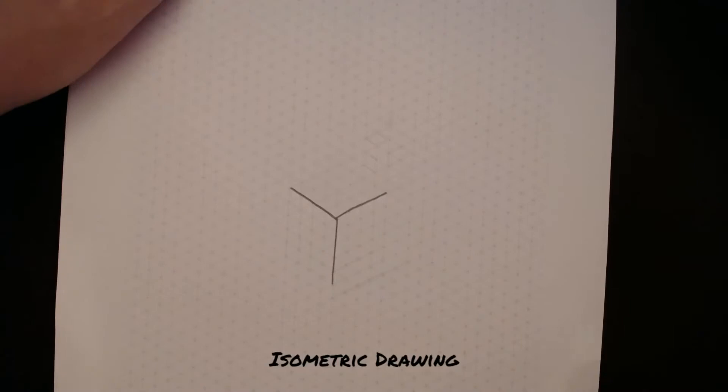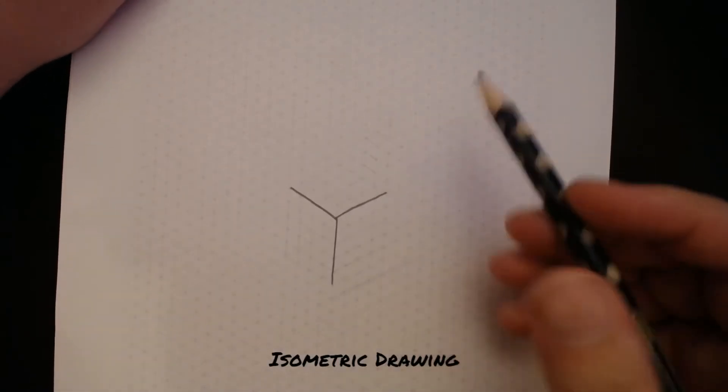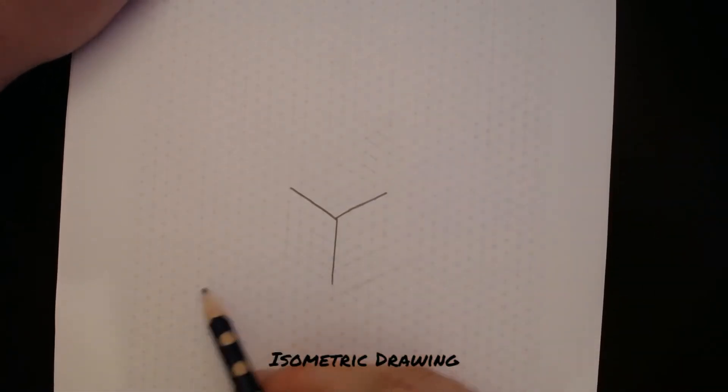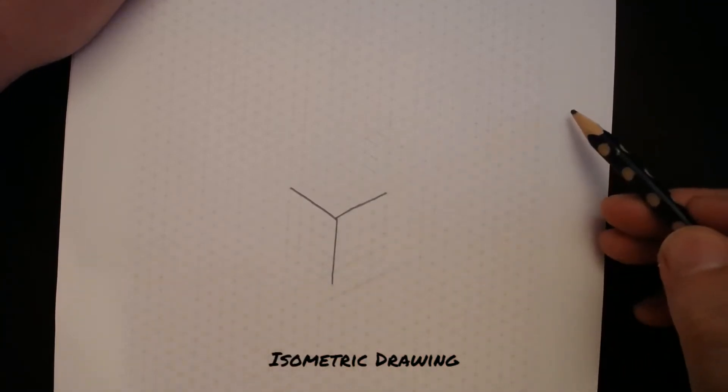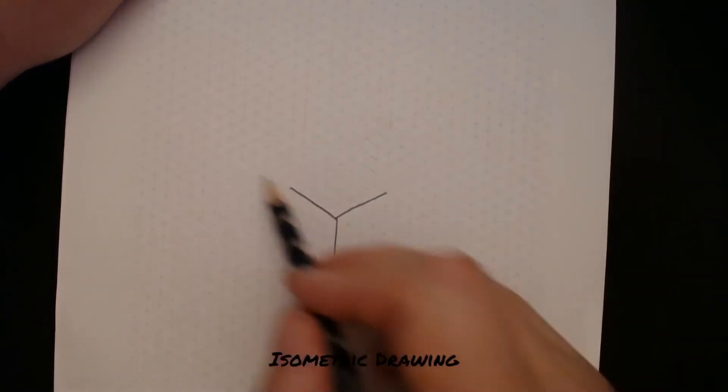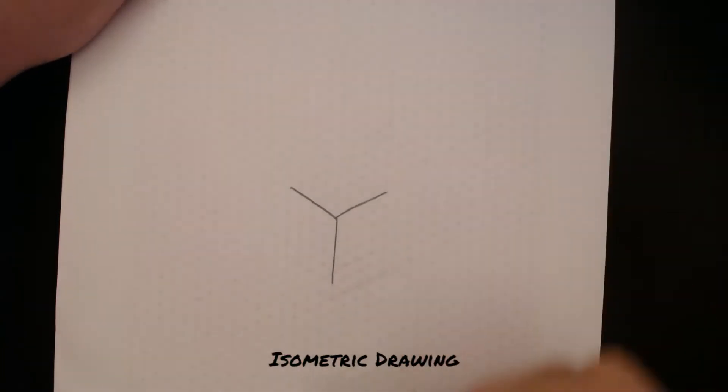The next thing we're going to have a look at are the three different lines that we have on this page. There are lines that are going up and to the right, there are lines that are going up and to the left, and there are lines that go from top to bottom.